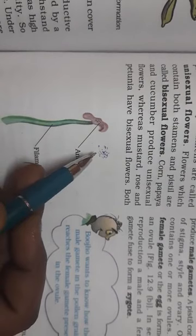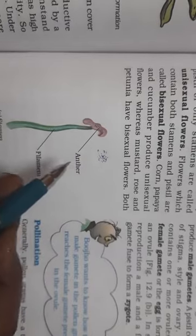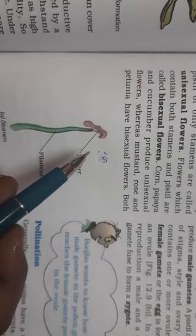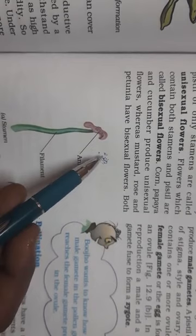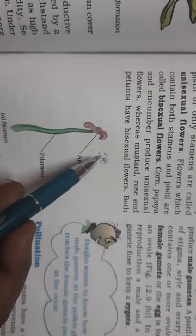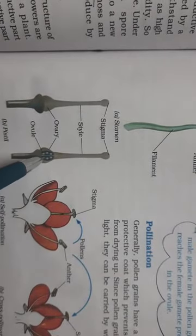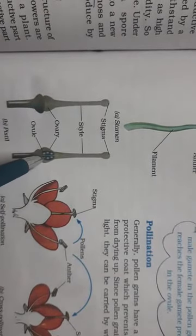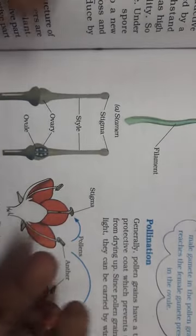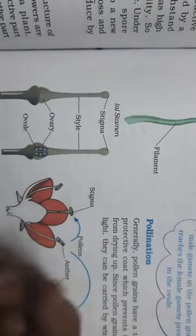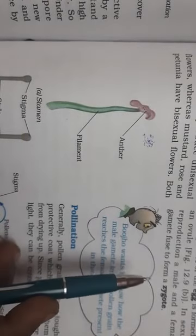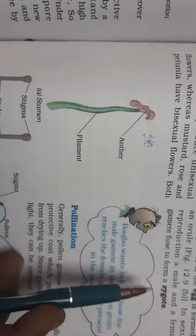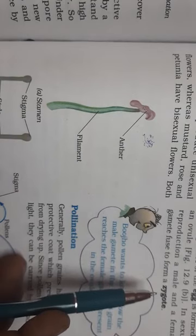About fertilization, I will tell you in the next video. In sexual reproduction, the male gamete found in the pollen and the female gamete present in the ovule fuse together to form a zygote. I will explain fertilization in detail in the next video.